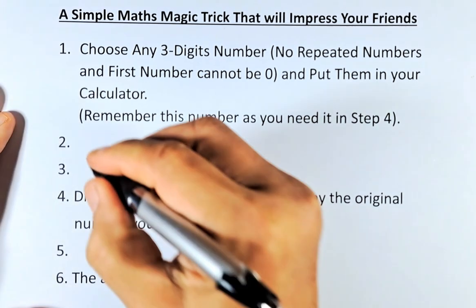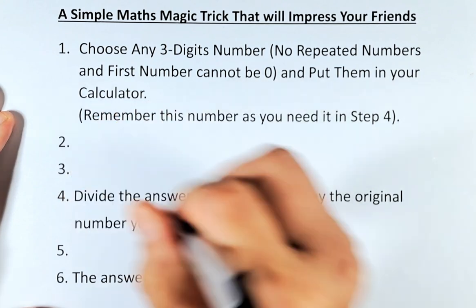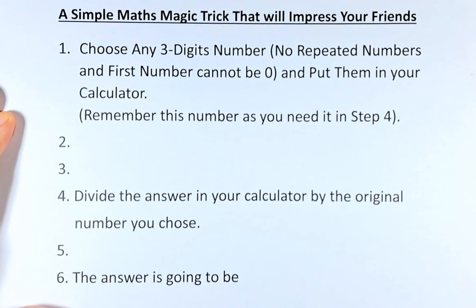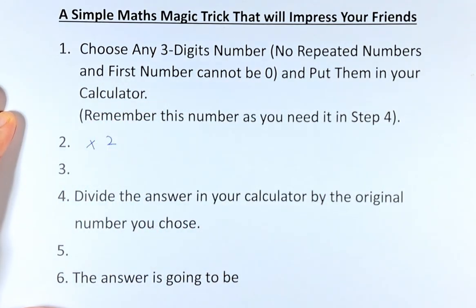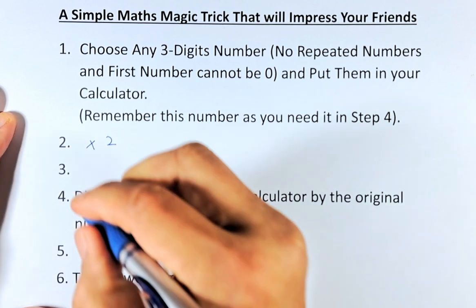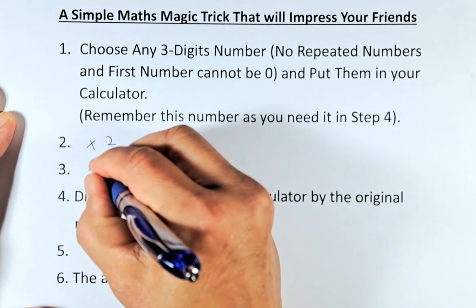You put the number in the calculator. Now, the first thing you're going to do, you're going to multiply by 2. Make sure you press the execute button. And the next step 3, you are going to multiply by 5.